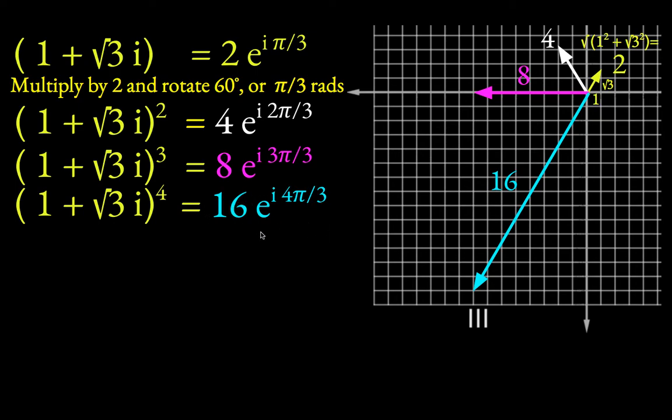So this number here, 16 e to the i 4 pi over 3, you could also have arrived at that. Instead of going through all these intermediate steps, what you could have done is just taken this original expression here just to the fourth power. So it would be 2 to the fourth, and then the fourth power on this exponent would just introduce another factor of 4 into the exponent. And you'd see you get the same exact expression.